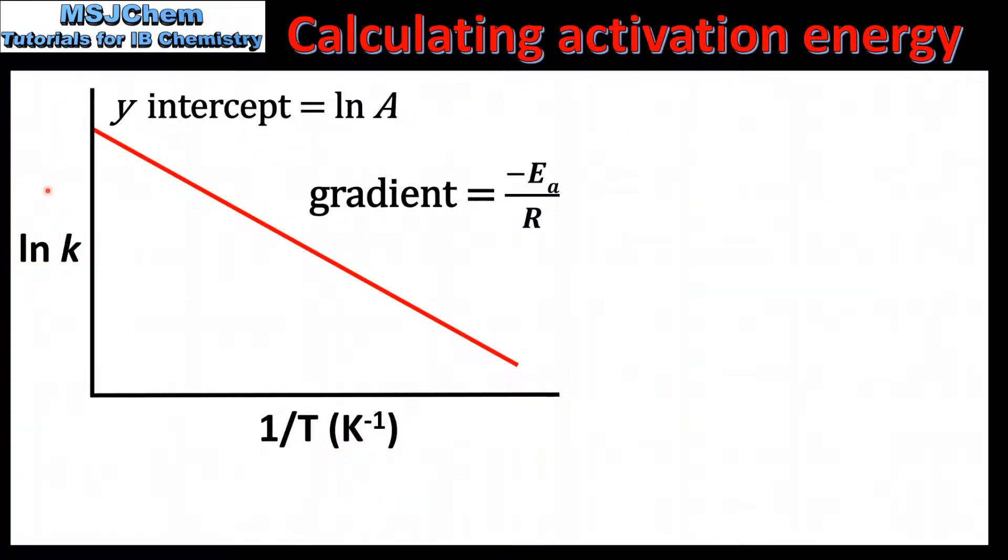On the left we have a graph of the natural log of K against 1 over T. As we saw in the previous slide, the y-intercept is the natural log of A and the gradient is equal to negative E_a over R.